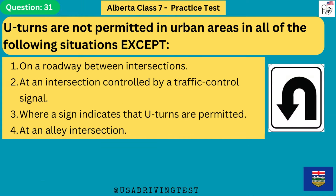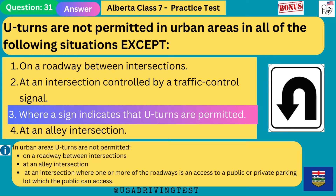U-turns are not permitted in urban areas in all of the following situations except: 1. On a roadway between intersections. 2. At an intersection controlled by a traffic control signal. 3. Where a sign indicates that U-turns are permitted. 4. At an alley intersection. The answer is 3: where a sign indicates that U-turns are permitted. In urban areas, U-turns are not permitted on a roadway between intersections, at an alley intersection, or at an intersection where one or more roadways is an access to a public or private parking lot.